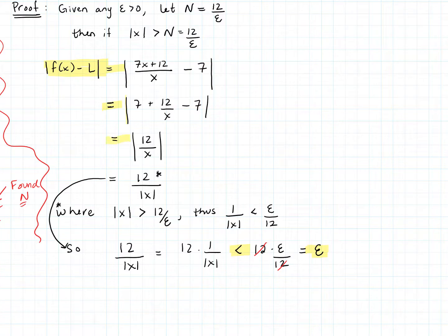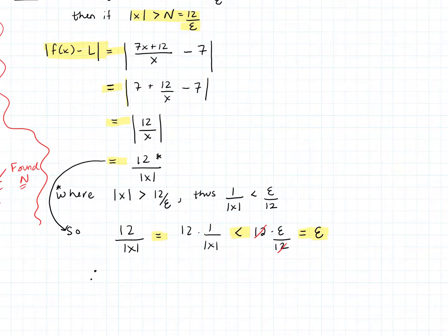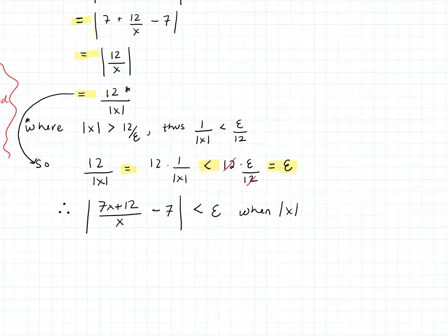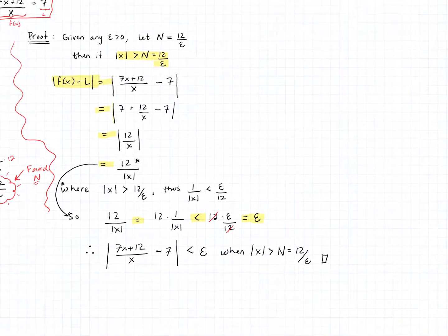Notice the chain: equality, equality, equality, equality — and then less than. So we have shown that as long as x > 12/epsilon, |f(x) - L| < epsilon. We can now finalize. Therefore — the three dots meaning 'therefore' — |(7x + 12)/x - 7| < epsilon when |x| > N, which we defined to be 12/epsilon. We have proven this limit at infinity.